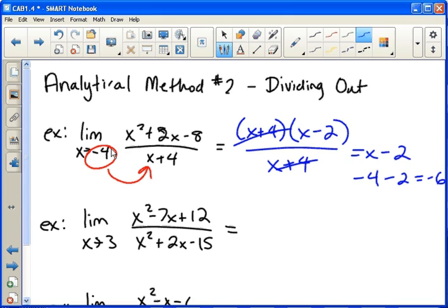In the example below that, we see the limit as x approaches three. And again, if you plug three in, you get zero in the denominator. And that's a problem.